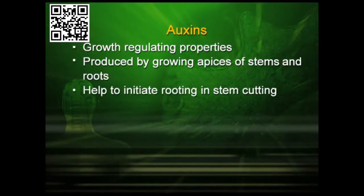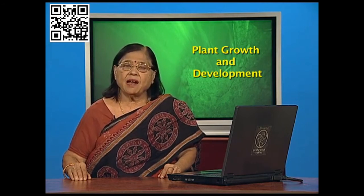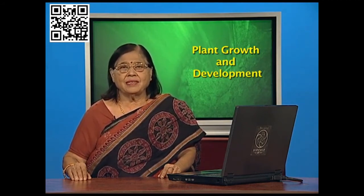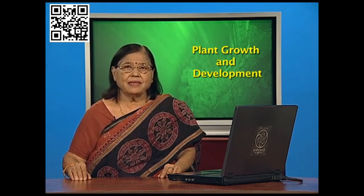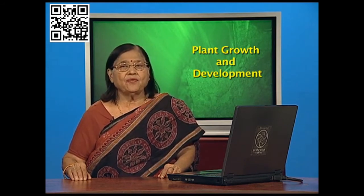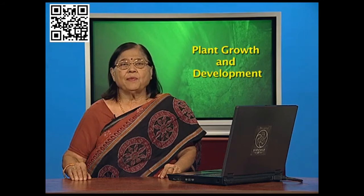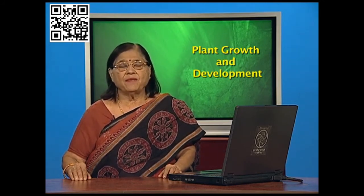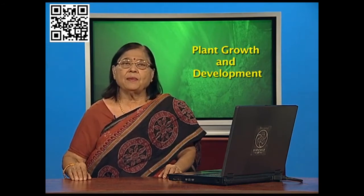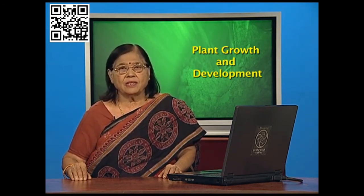Auxins help to initiate rooting in stem cuttings. In certain plants we take a stem cutting and graft it onto another tree; the growth of roots in the stem cutting is due to auxins. Without auxins, stem cutting and grafting procedures could not take place. Auxins also promote flowering, especially in pineapples — unless flowering takes place, fruiting will not take place, and the plant's purpose is to form seeds through flowers, then fruits, then seeds.